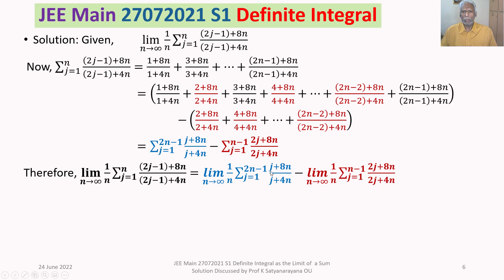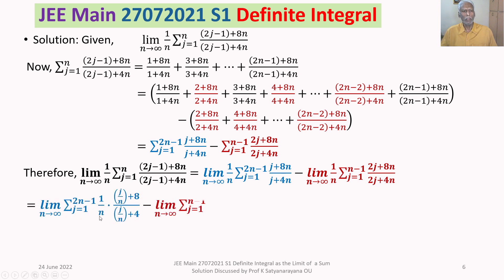Dividing numerator and denominator by n in both expressions, the first becomes limit n→∞ of sigma of (1/n) times (j/n + 8)/(j/n + 4), and the second becomes limit n→∞ of sigma j=1 to n−1 of (1/n) times (2j/n + 8)/(2j/n + 4). We want to recognize these as definite integrals, since they are limits of infinite sums.